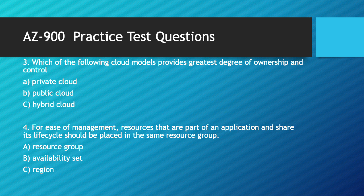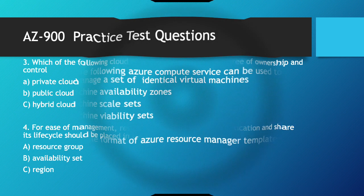Next question: for ease of management, resources that are part of an application and share its lifecycle should be placed in the same resource group. The answer is resource group. It allows you to easily maintain all the resources. If you want to apply any policy, you can apply it at the resource group level and it will be propagated to all the resources under that resource group. B and C are not correct.